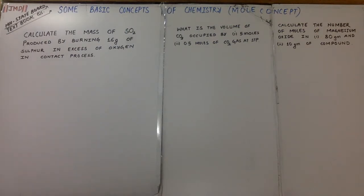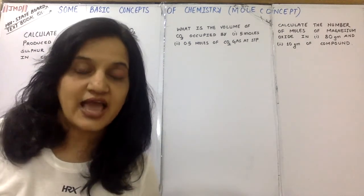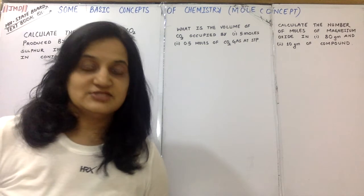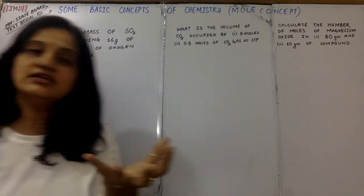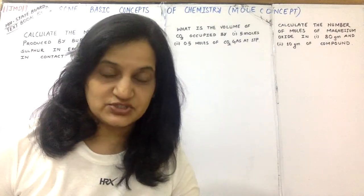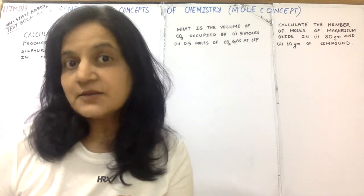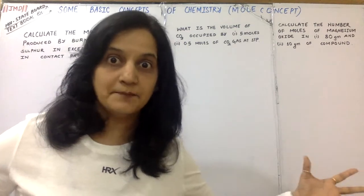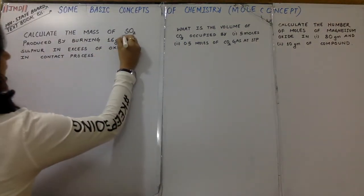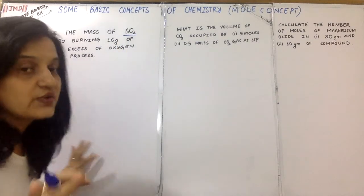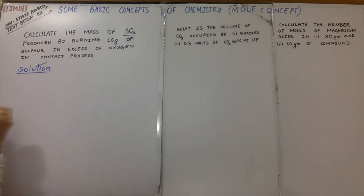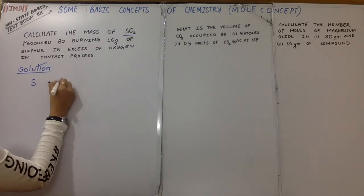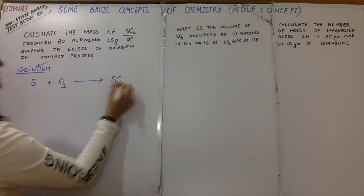Calculate the mass of sulfur dioxide produced by burning 16 grams of sulfur in excess of oxygen in contact process. Students from the ICSE board have already learned the contact process in chemistry. For others, the knowledge sufficient here is: contact process is a process used to manufacture sulfuric acid on a large scale. The very first thing I'll do is write the general reaction. So in my solution for our theory exams, the very first thing is sulfur combines with oxygen to give me sulfur dioxide.